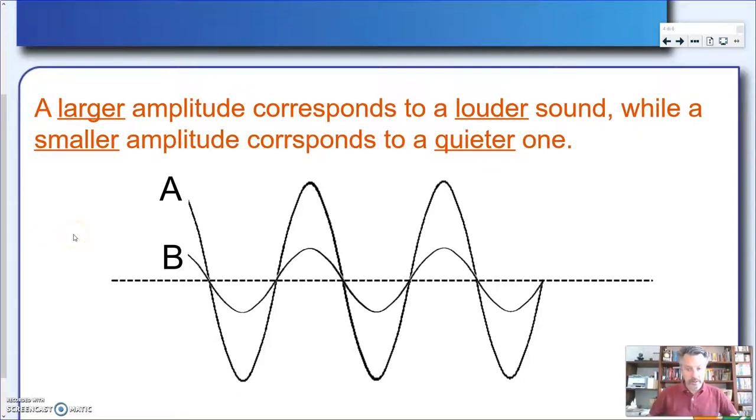And as you can see here in this picture, we have two sine waves exactly of the same wavelength, but of much different amplitudes. And as you can see, A has a bigger amplitude. So A, assuming that A is a sound wave, A is way louder than B.